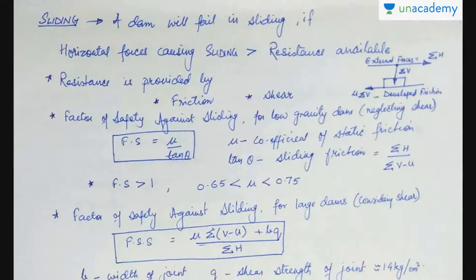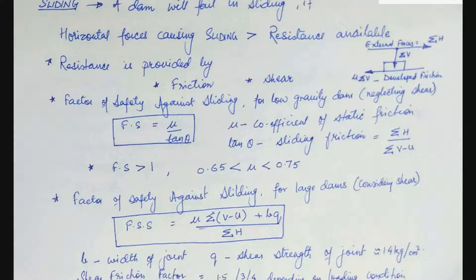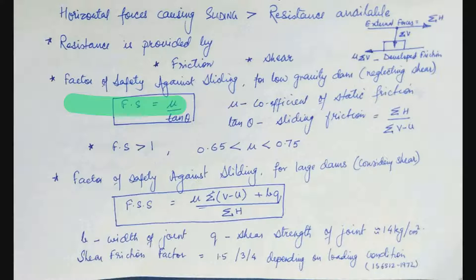Now let's see, sliding. A dam will fail in sliding at the base or at any other level if the horizontal forces causing sliding is more than the resistance available. The resistance is actually provided by friction or maybe because of shear. Shear strength develops at the base if benched foundations are provided and at other joints if the joints are carefully laid so that a good bond develops.